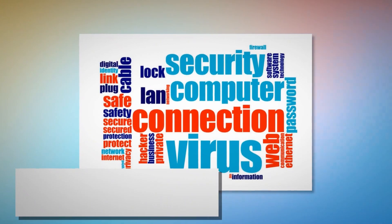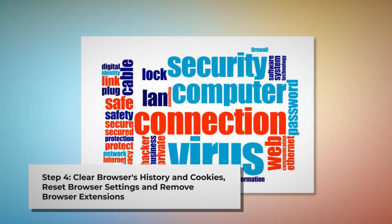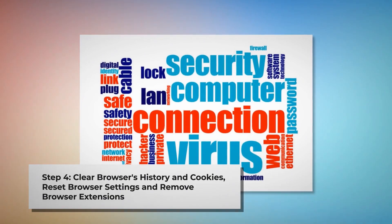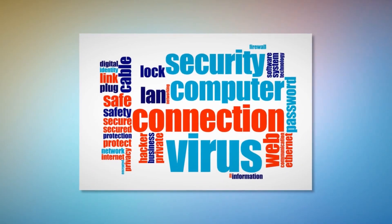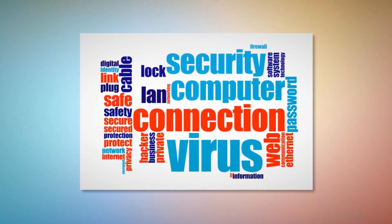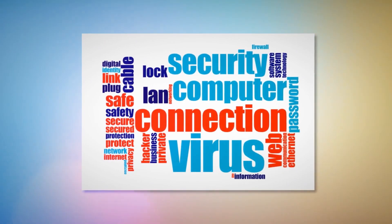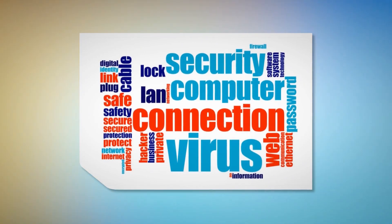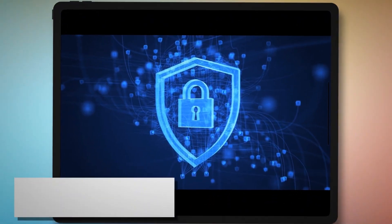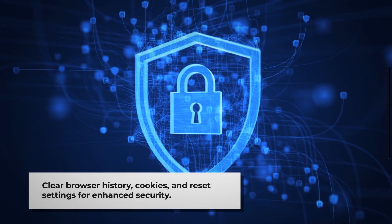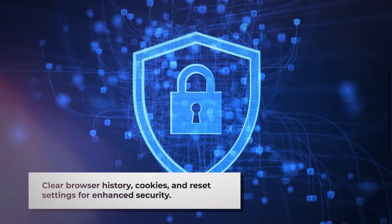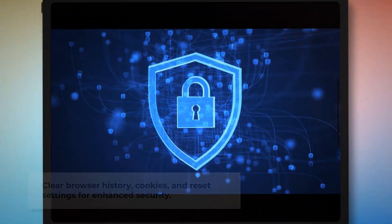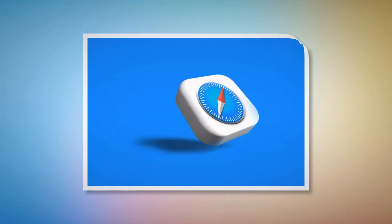Step 4: Clear browser history and cookies. Reset browser settings and remove or disable unknown browser extensions to be safe from Adware. Once you delete the harmful files as mentioned in Step 3, you should delete malicious or unknown extensions from your browsers like Safari, Chrome, Firefox, Opera, and so on, whichever you are or were using. You should also delete browser history and cookies from your browser and reset your browser. Note: Before you reset your browser settings, it is always a good idea to back up your bookmarks.